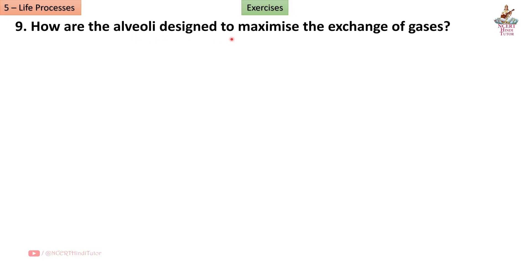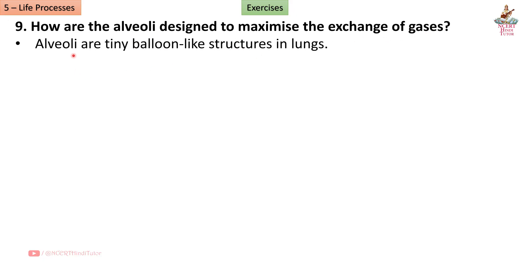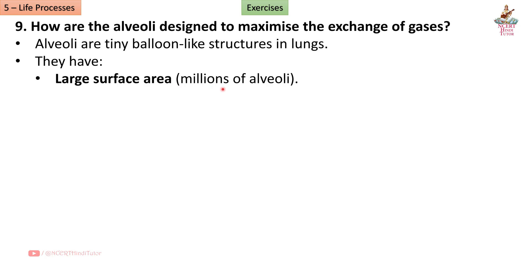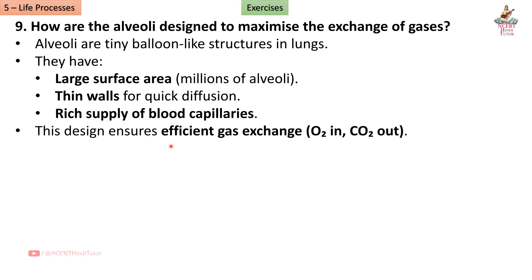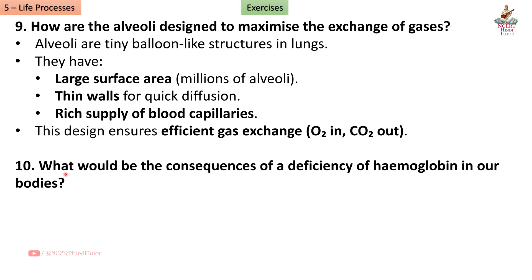Aerobic respiration occurs in mitochondria; anaerobic occurs in the cytoplasm. Examples of anaerobic organisms: yeast (alcoholic fermentation), some bacteria, and muscle cells (produce lactic acid during oxygen shortage). Question 9: How are the alveoli designed to maximize the exchange of gases? Answer: Alveoli are tiny balloon-like structures in the lungs. They have a large surface area (millions of alveoli), thin walls for quick diffusion, and a rich supply of blood capillaries — ensuring efficient gas exchange (O2 in, CO2 out).